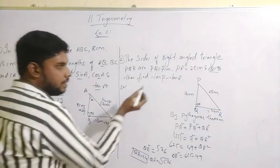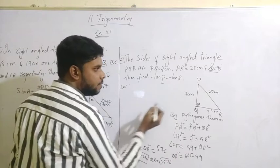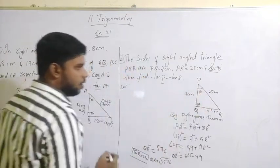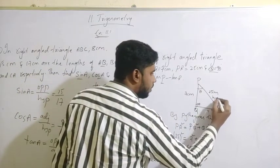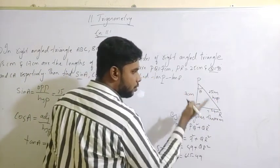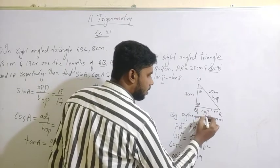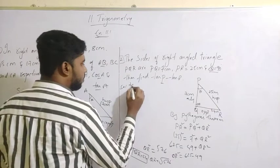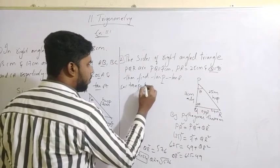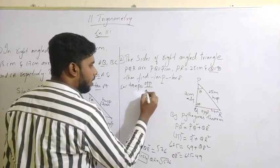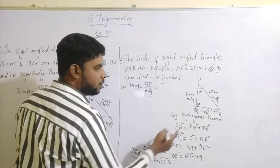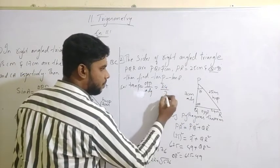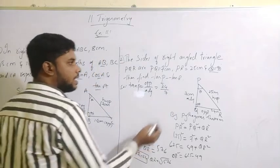Now finding tan P. The angle here is P, so this is my theta. The longest side is the hypotenuse, the side opposite to the angle is the opposite side, and this is my adjacent side. The formula for tan P is opposite by adjacent. Opposite is 24 and adjacent is 7, so tan P equals 24 by 7.